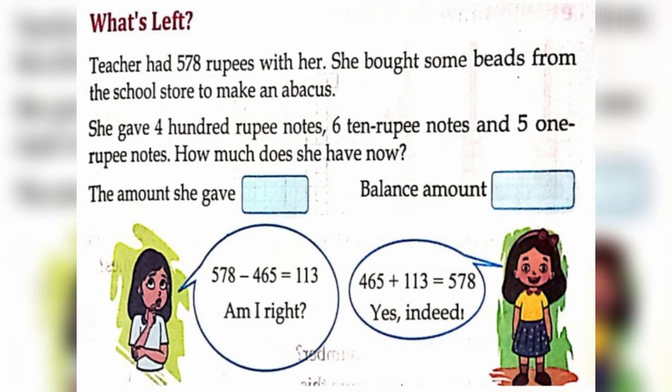What's left? Teacher had 578 rupees with her. She bought some beads from the school store to make an abacus. She gave 400 rupee notes, 6 ten rupee notes and 5 one rupee notes. How much does she have now? The amount she gave, 465. Balance amount, 113.